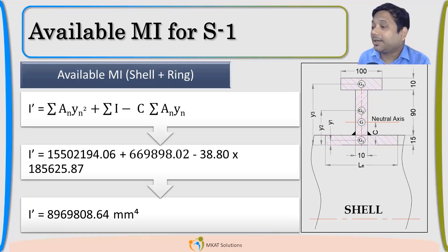So, now I have calculated all the individual terms. Summation of AN yn square plus summation of I which is the individual moment of inertia minus centroid multiplied with AN yn. I have already the values calculated. I will just put all the values there. I will be able to get the available moment of inertia which is 89 lakhs mm4.